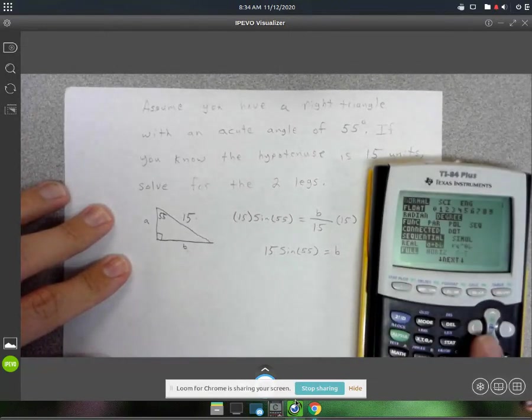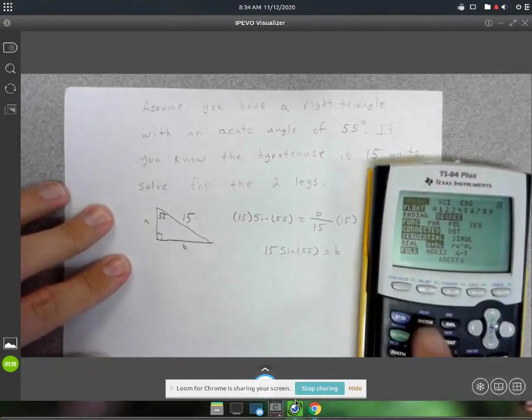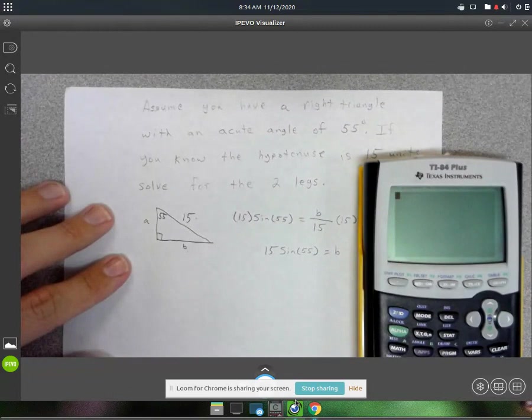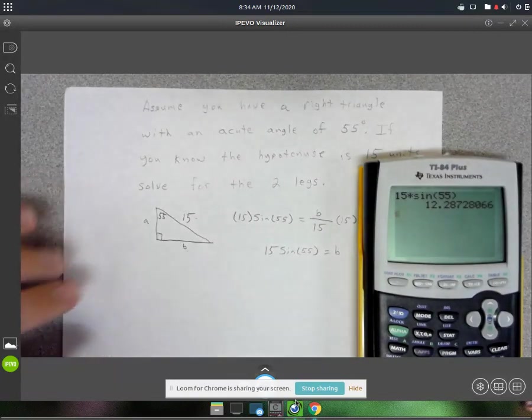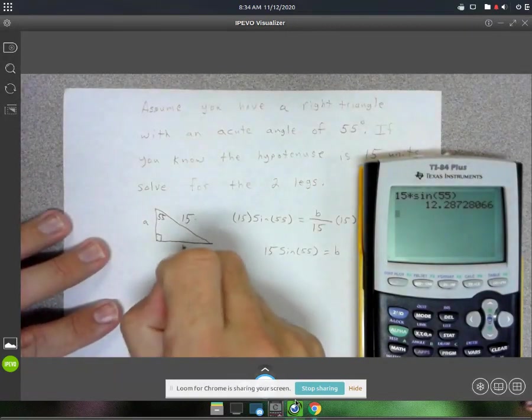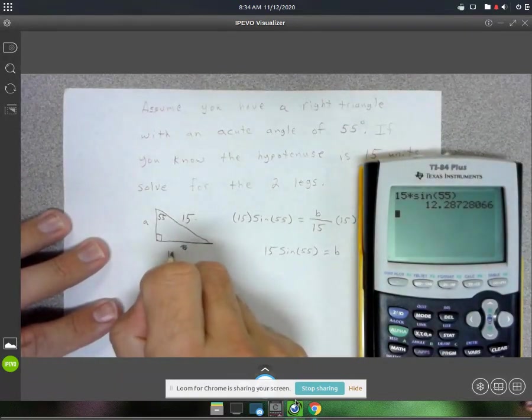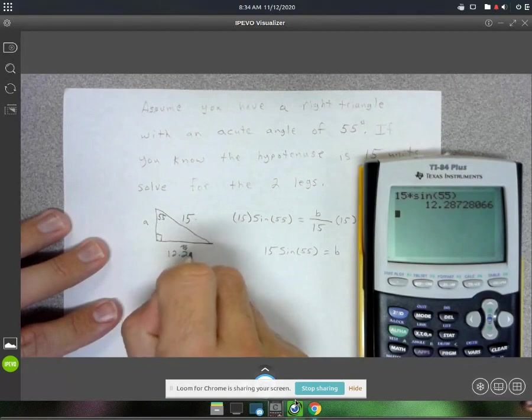Again, make sure your calculator is in degree mode here. Yeah, I think on your online calculators you might have to reset that every time. Alright, so 15 times the sine of 55 gives us 12.29. So B equals 12.29.